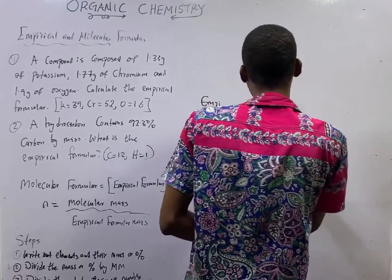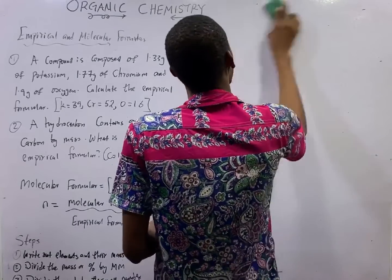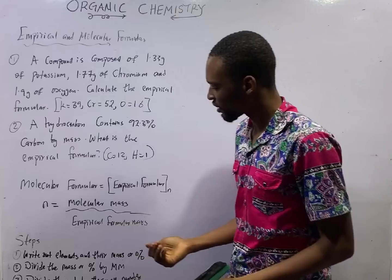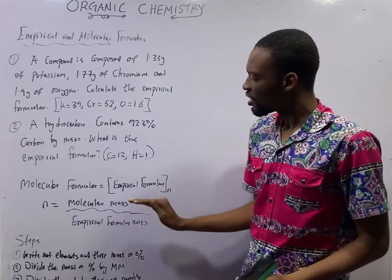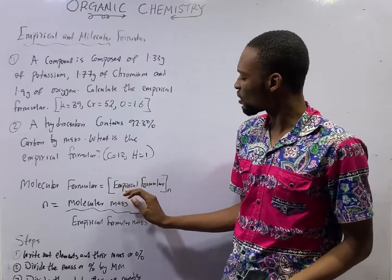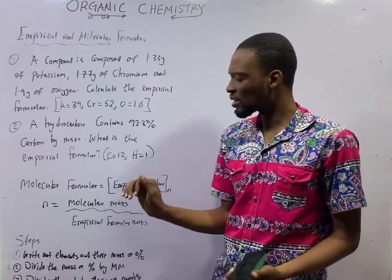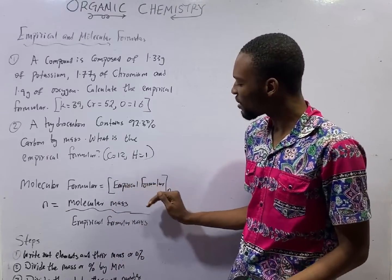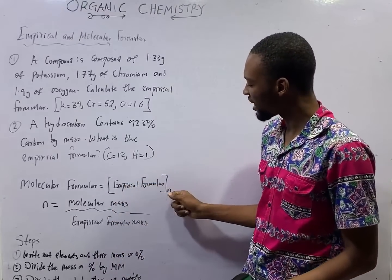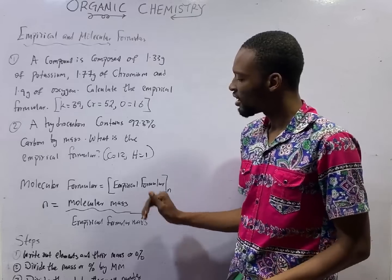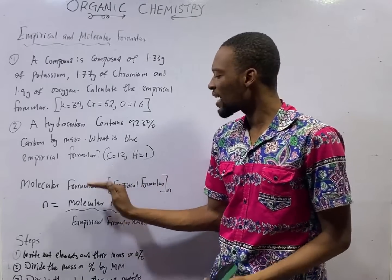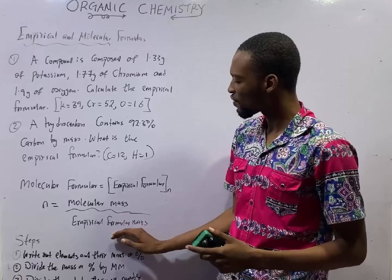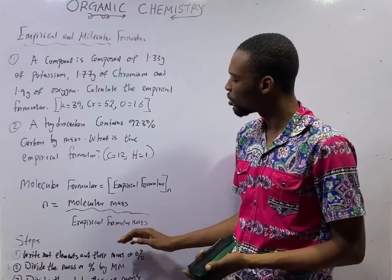How do we calculate empirical formula and molecular formula? If you are able to calculate the empirical formula, to get the molecular formula you multiply the empirical formula by N. N is obtained by dividing the molecular mass you are given by the empirical formula mass.